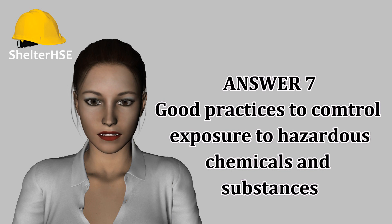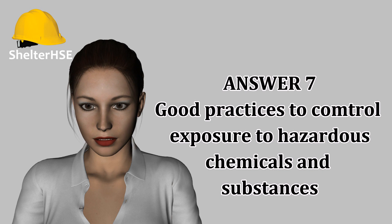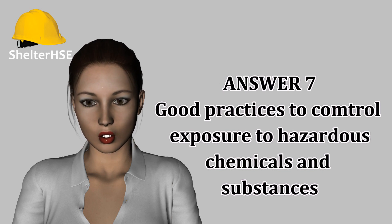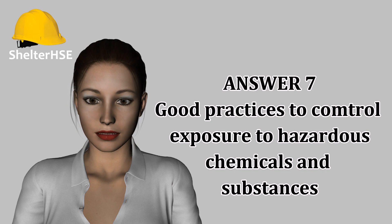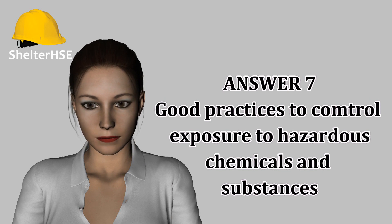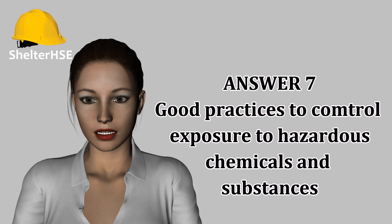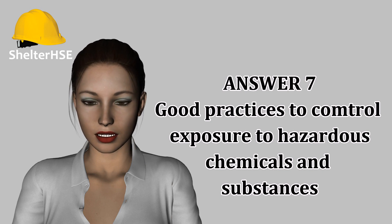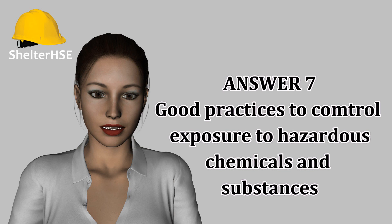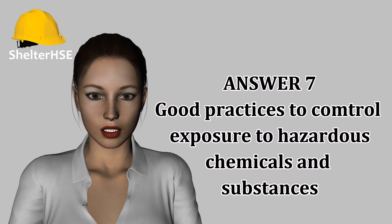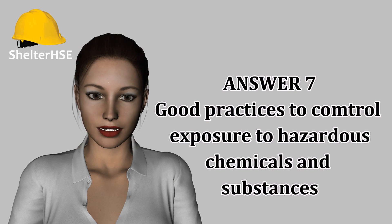PPE should be used in combination with other control measures if adequate control cannot be achieved otherwise. Specifically, respiratory protective equipment may be required if airborne concentrations still exceed an OEL. Other PPE such as gloves, overalls, and eye protection may also be required. Good personal hygiene can prevent accidental ingestion of materials through eating with contaminated hands. Vaccinations may be available against some infectious materials but are very much a last line of defense. Health and medical surveillance may also be required to monitor the potential development of ill health conditions.